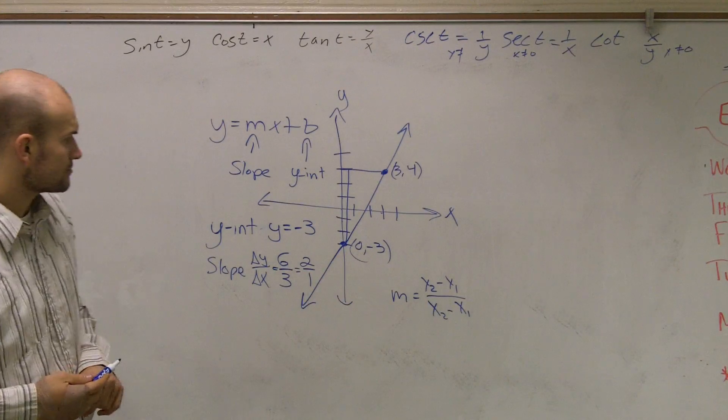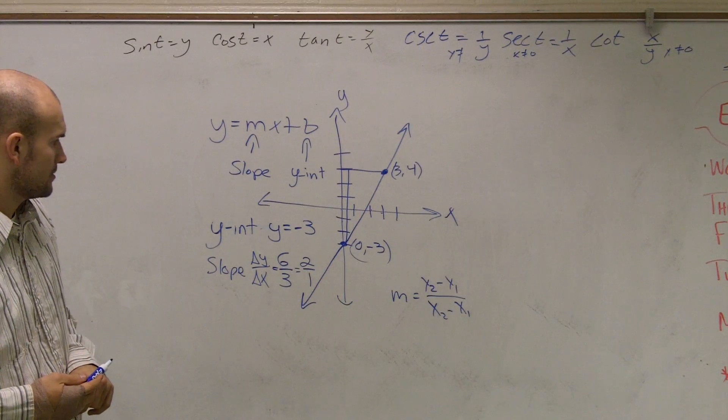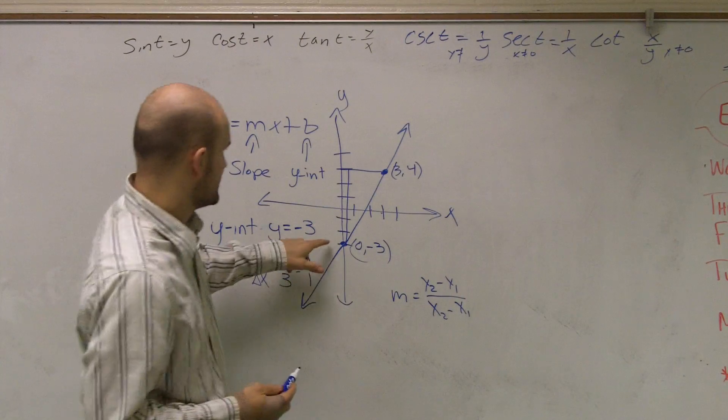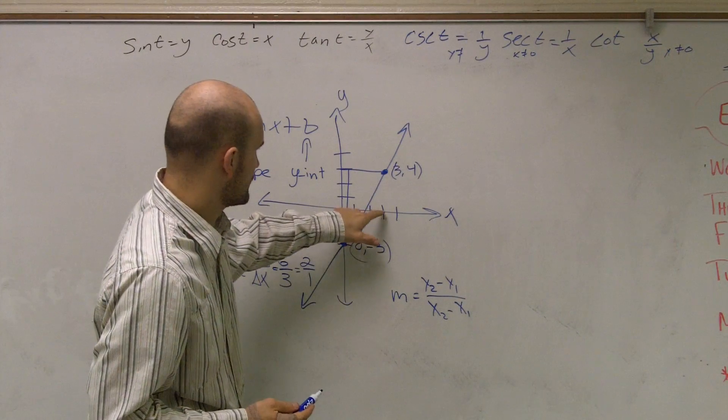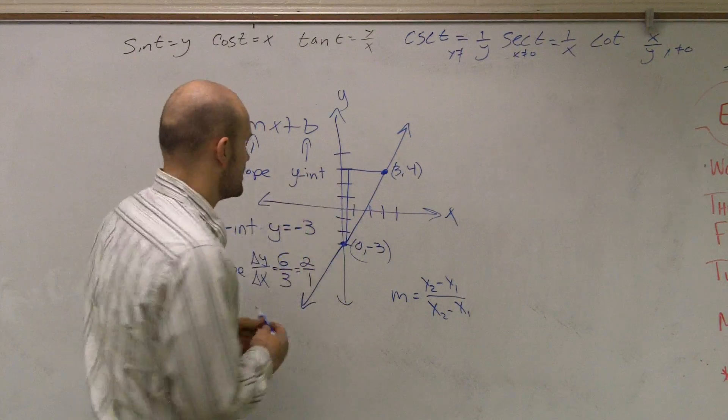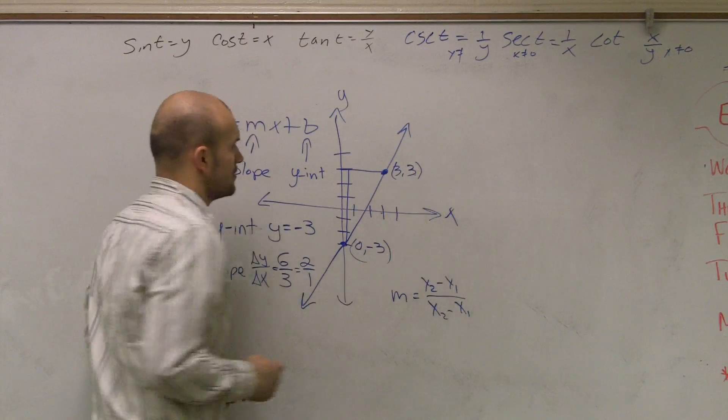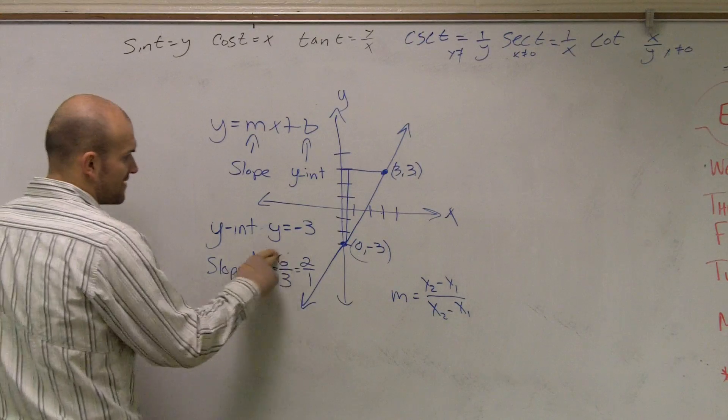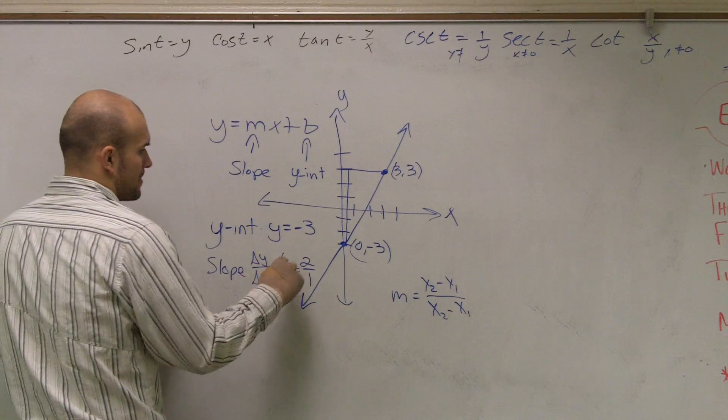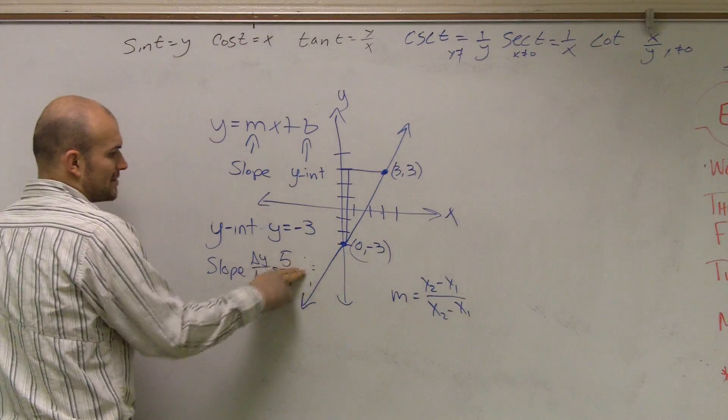So here, 1, 2, 3. Oh, that's not 4. That's 3. So really, this is 5 thirds, isn't it? My bad. So 5 thirds we cannot reduce.